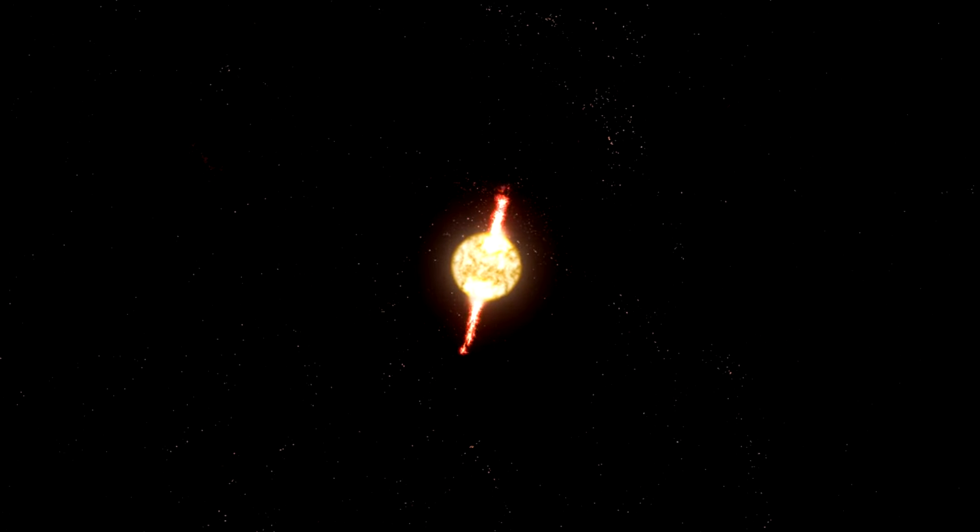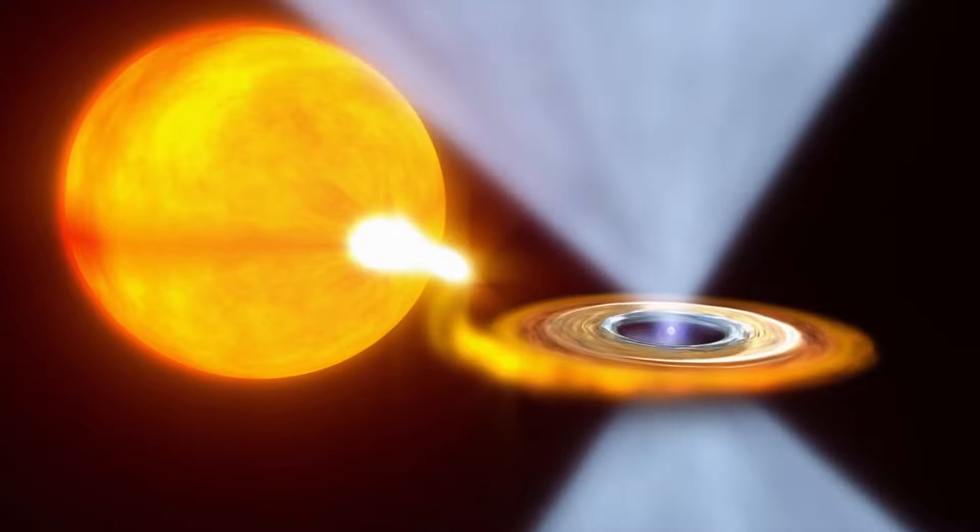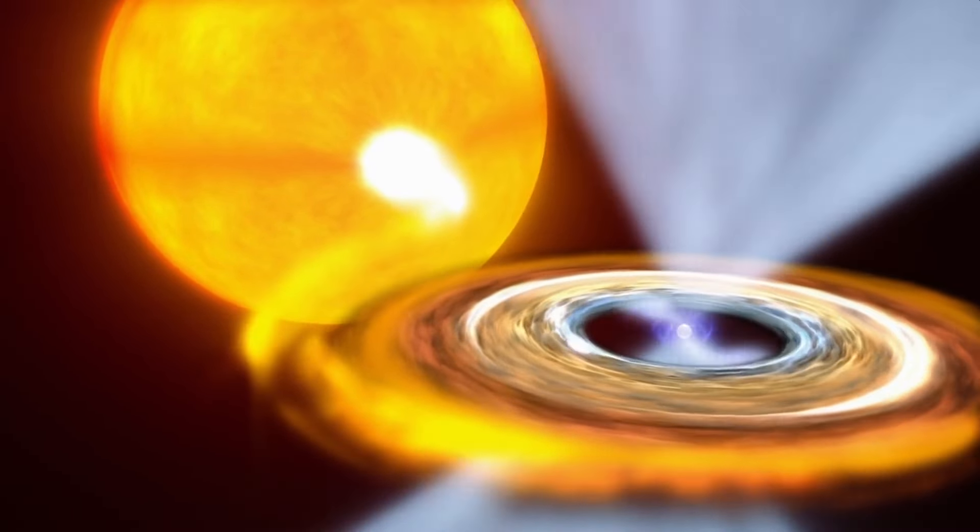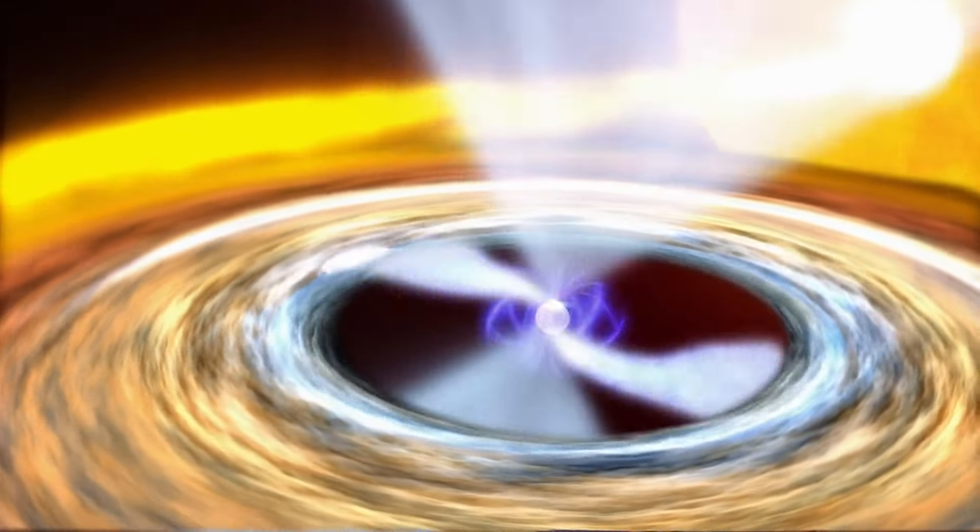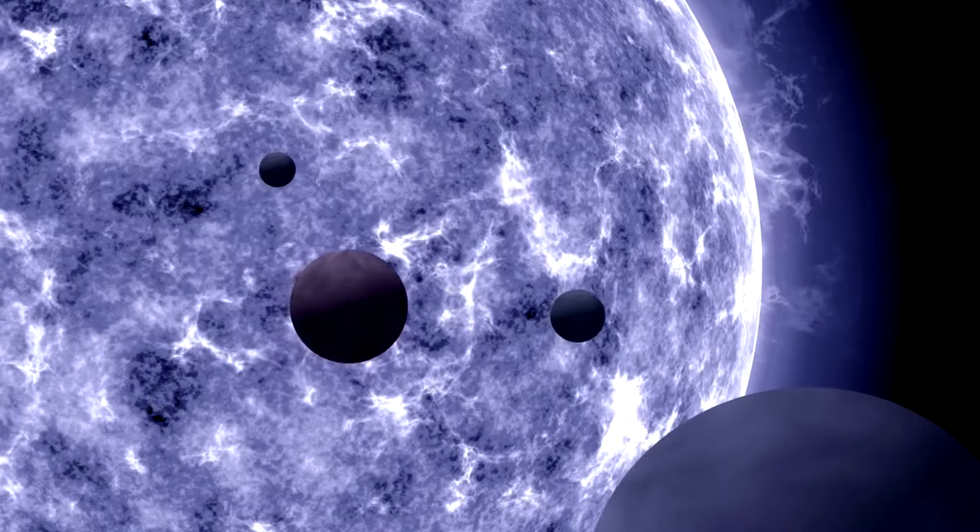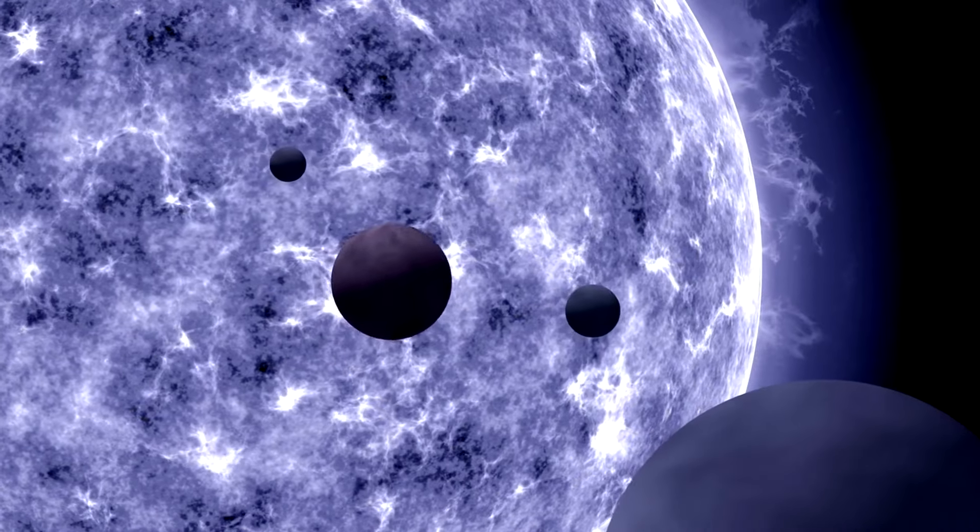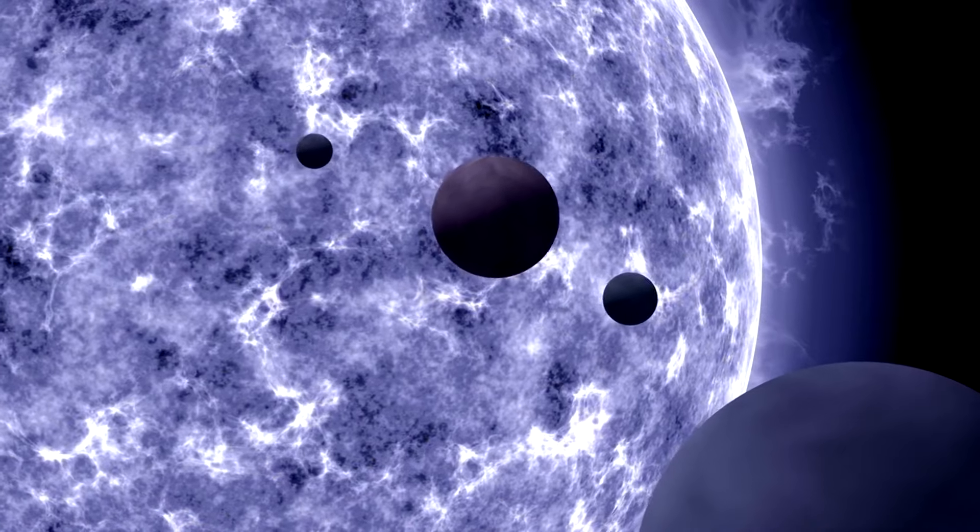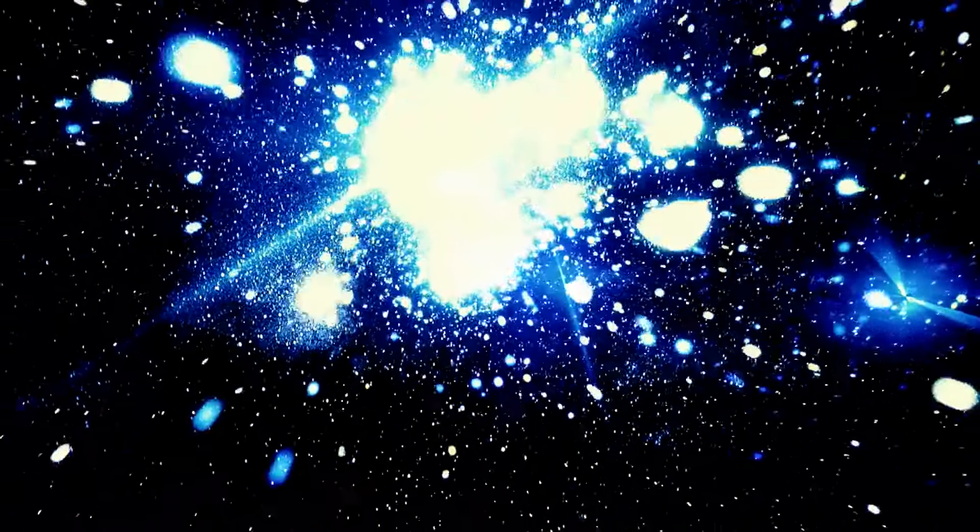Furthermore, the study of a Betelgeuse supernova could shed light on the formation and behavior of neutron stars and black holes. These are the remnants left behind after a supernova explosion. Neutron stars are incredibly dense objects composed almost entirely of neutrons, while black holes are regions of space where gravity is so strong that not even light can escape. Observing the formation of these objects and their interactions with the surrounding environment would provide critical data for testing theories of gravity and high-energy astrophysics.